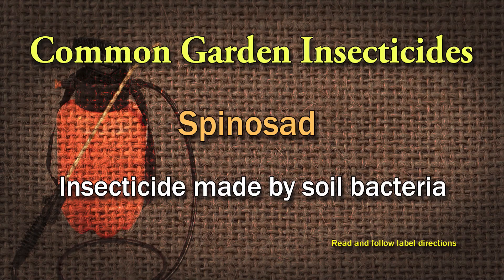Spinosad is a microbial or biological insecticide that does an amazingly good job on armyworms, caterpillars, Colorado potato beetle, diamondback moth, European corn borer, flea beetles, imported cabbage worm, leafminers, and loopers. It's another great option if you're organically minded.